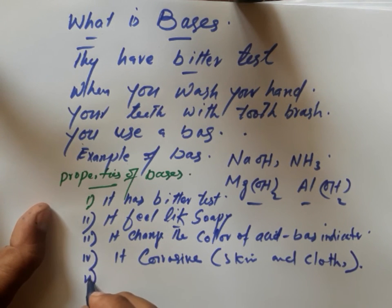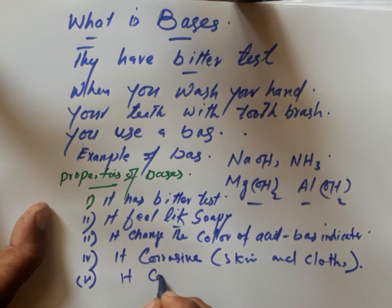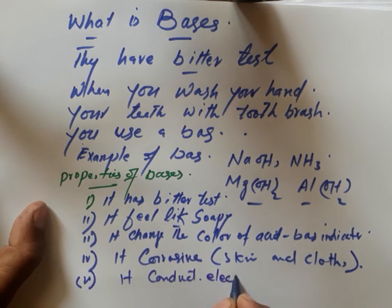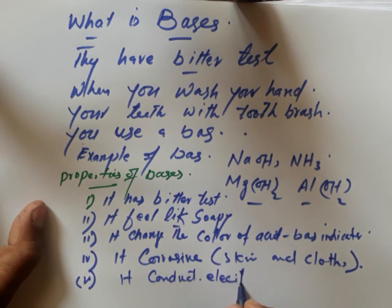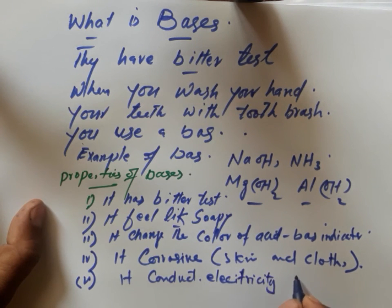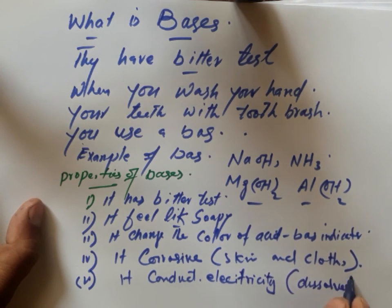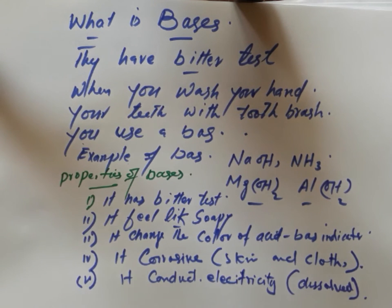Property number four: bases are corrosive to skin and cloth. Property number five: bases conduct electricity.